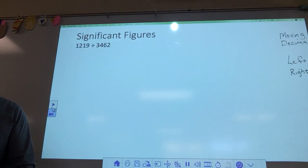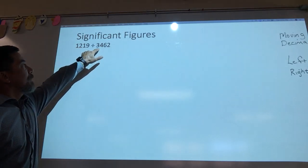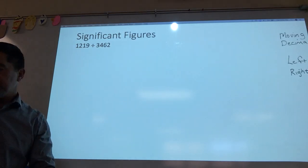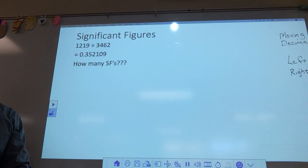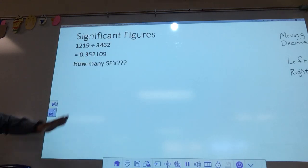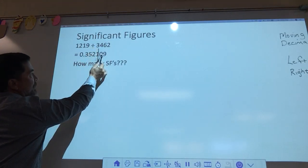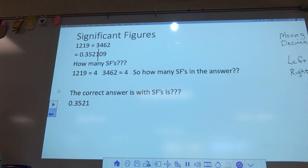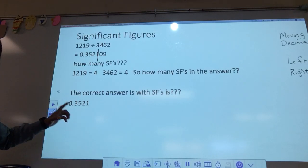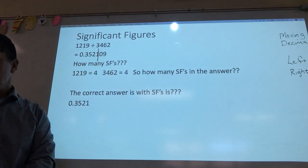Last one here: 1,219 divided by 3,462. Both numbers have 4 significant figures, so the answer will have 4. Leading zeros never count. The zero after the decimal does not round the 1, so the correct answer is 0.3521. Remember, you keep the leading zero there — even though it doesn't count as significant, you can't throw it away. It just tells us where to chop off the end.